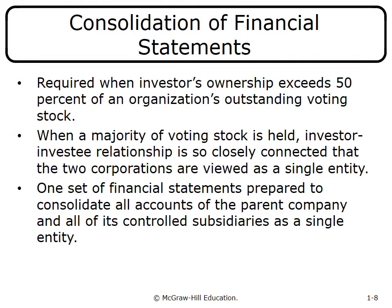To summarize: under the fair value method, report at fair value; if unknown, use cost; but if market activity indicates declining value, report at the lower amount. This applies when ownership is less than 20%. At the other extreme, owning more than 50% of voting stock leads to consolidation, covered in Chapter 2. When a majority is held, the investor and investee are viewed as a single entity, and one consolidated set of financial statements is prepared.